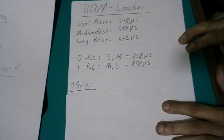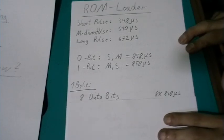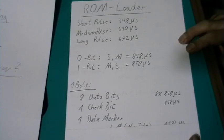So how is a byte written down to tape with the ROM loader? A byte consists of eight data bits, eight times 858 microseconds. We have a check bit, again 858 microseconds. And a data marker. And that's where the long pulse comes in place. A long pulse followed by a medium pulse says that the next block is new data.